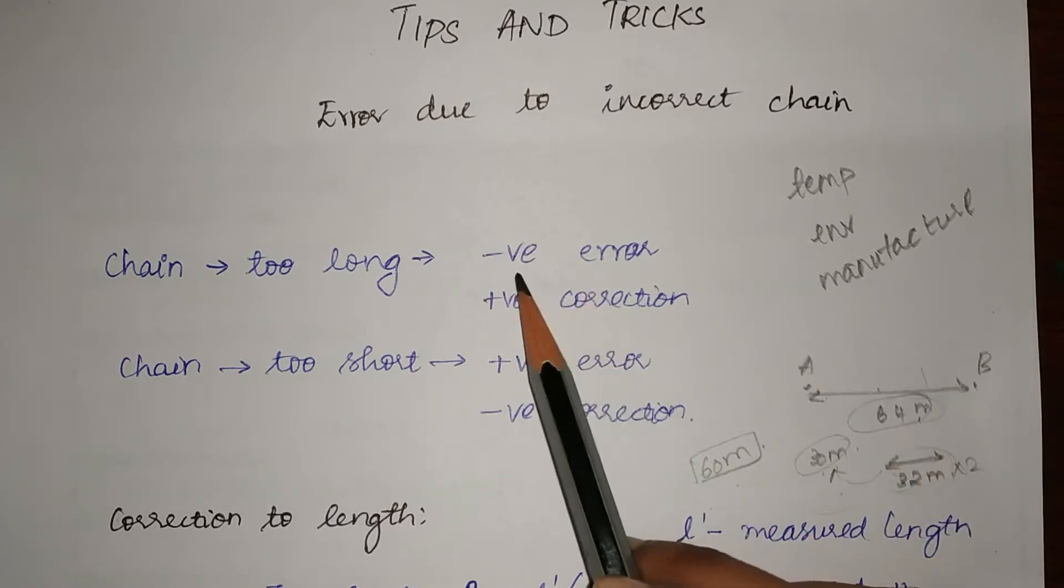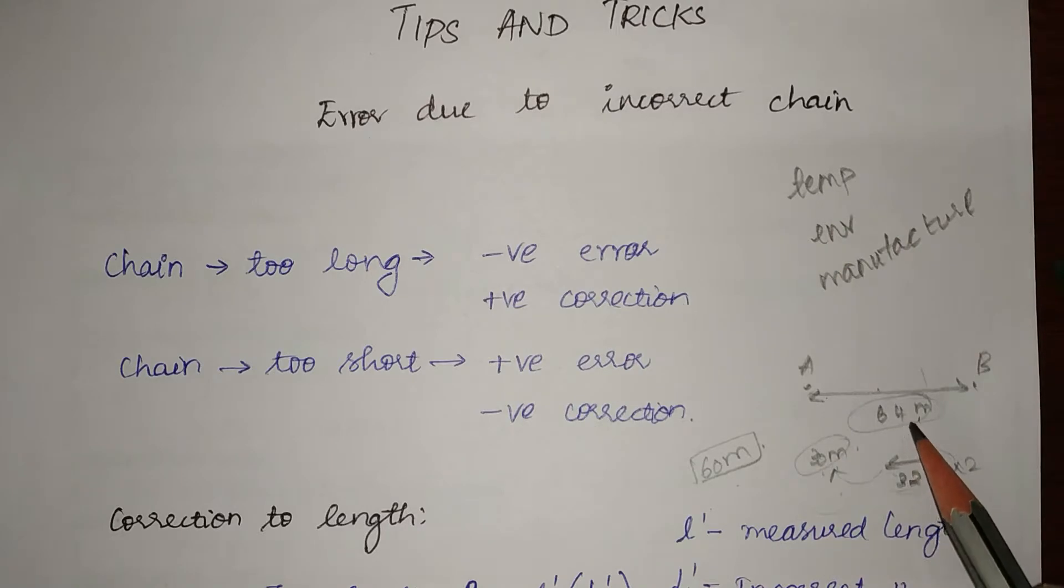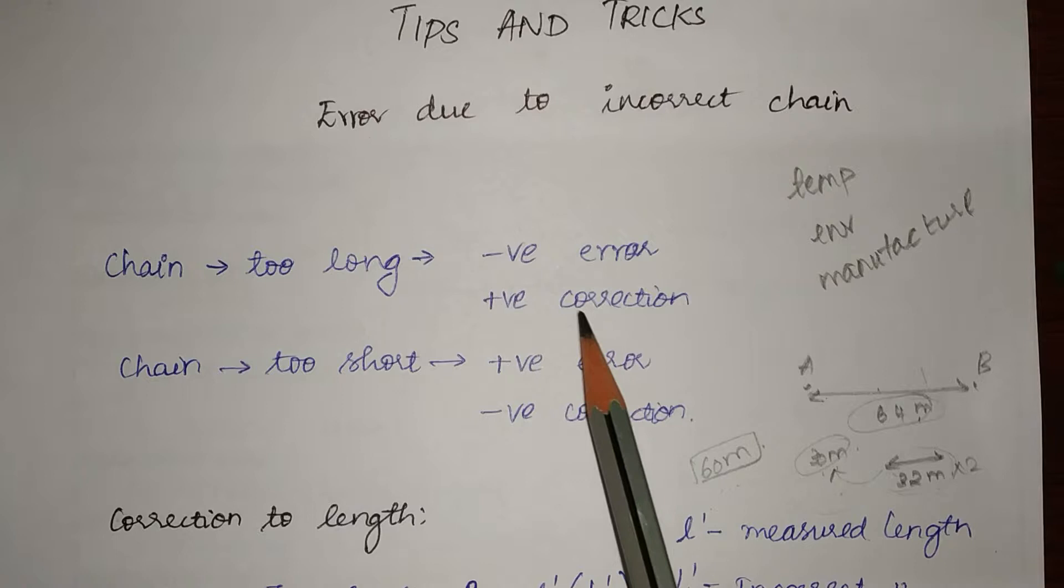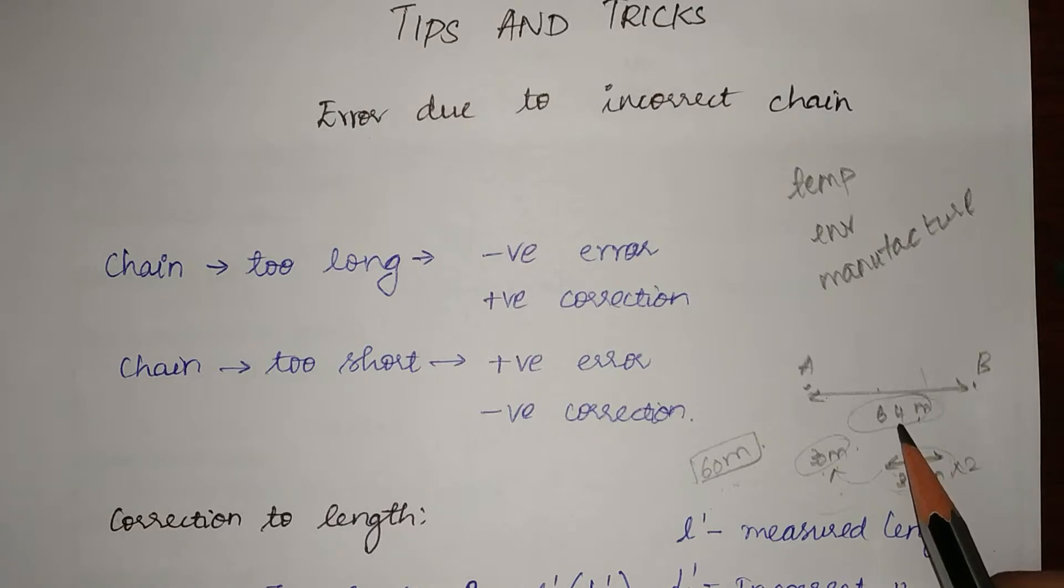So the error is negative. Because in real it is 64 meters and the answer we have got is 60 meters. Therefore a positive correction has to be applied. A correction of plus 4 has to be applied to obtain a value of 64.